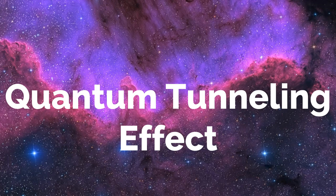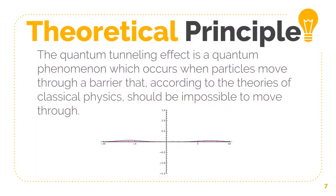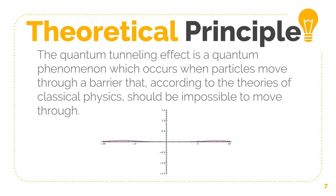So, what is tunneling? Classically, electrons and holes must have sufficient energy to cross the junction. But according to quantum mechanics, there is a finite probability that a particle can penetrate through the barrier for a thin width. In simple words, the quantum tunneling effect is a quantum phenomenon which occurs when particles move through a barrier that, according to the theories of classical physics, should be impossible to move through. The barrier may be a physically impossible medium such as an insulator or vacuum, or a region of high potential energy. This phenomenon is called tunneling, and hence the Esaki diode is known as a tunnel diode.